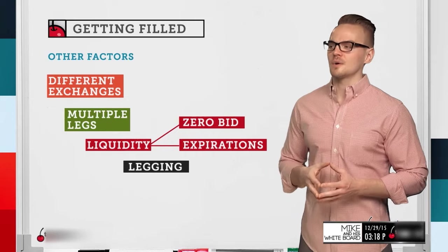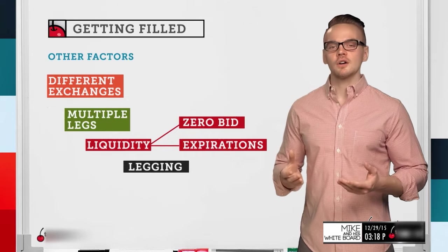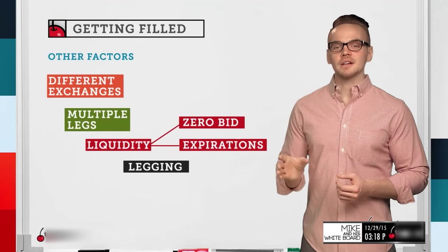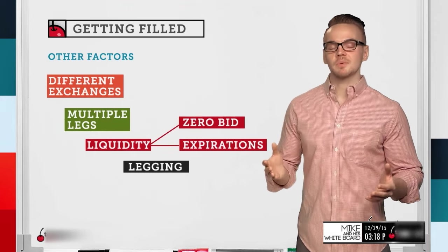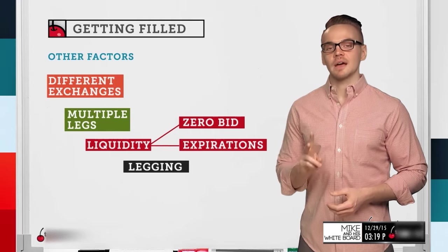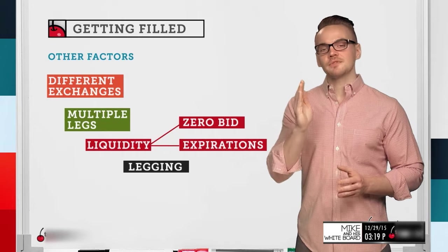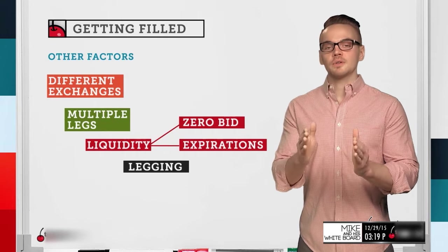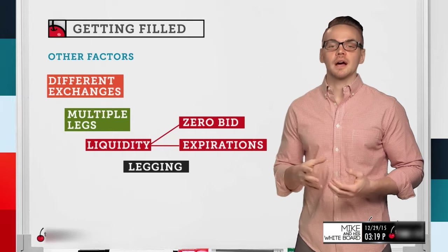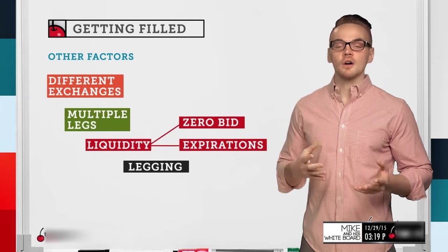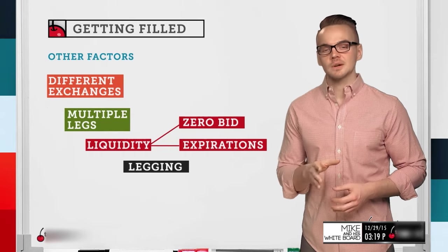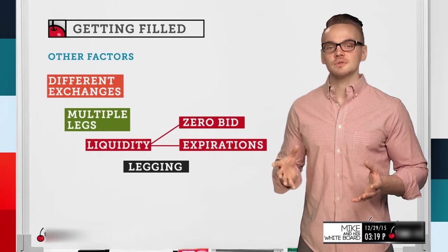Another thing to note is that the more legs you have on a trade, the harder it's going to be to get filled. If I'm routing a spread — selling a put spread instead of a naked option — I have two legs, and I have to be filled on each of those legs before the total order can be filled. If I'm routing an iron condor, which has four legs, it's going to be even harder to get filled all together. That's why we always stick to the most liquid underlyings so we don't have to deal with that issue.